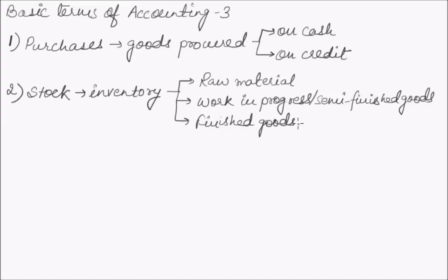Now we will understand debtors. Debtors are persons or other entities who owe to an enterprise an amount for buying goods and services on credit. The total amount standing against such person or entity on the closing day is shown on the balance sheet as sundry debtors on the asset side.